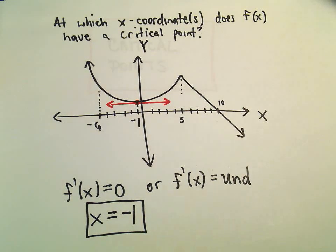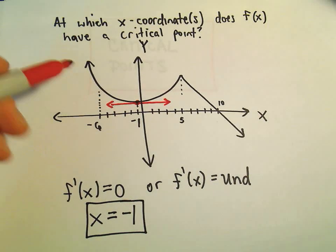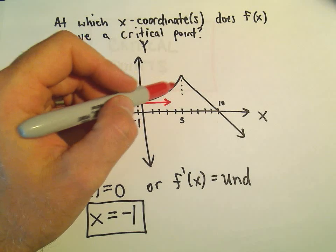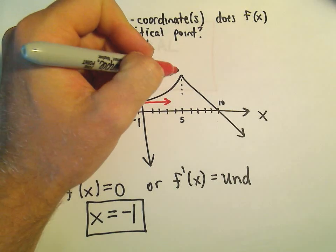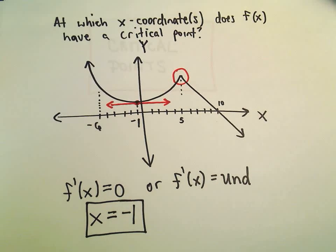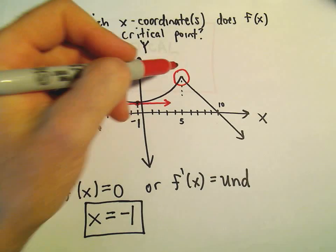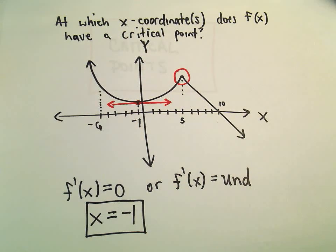The other place you have critical points are where the function - we call them cusps. Anywhere there's kind of any sharp points, any abrupt changes in direction. So notice here there's kind of a sharp little point on the graph, and that would be a place where the derivative would actually be undefined.